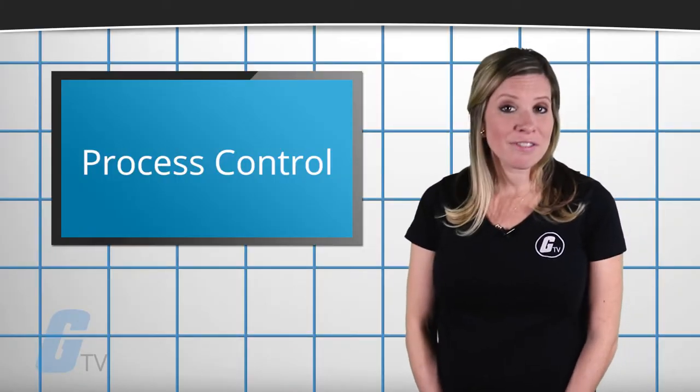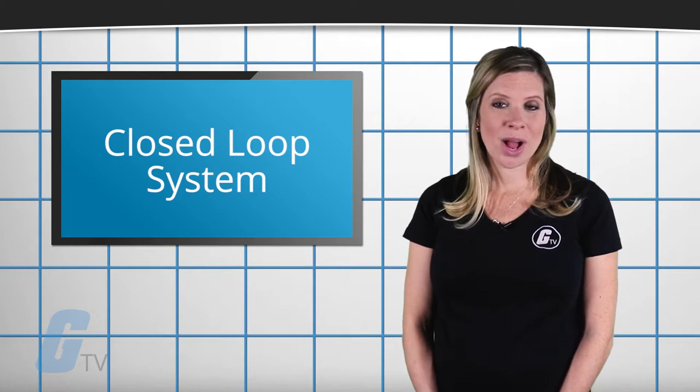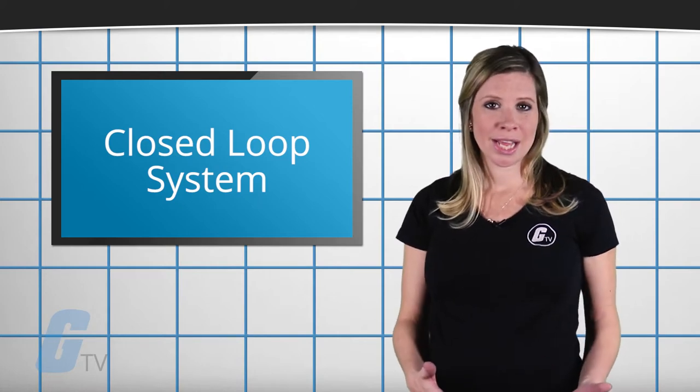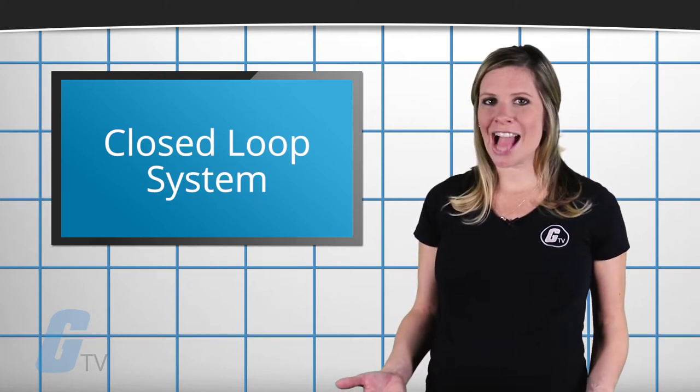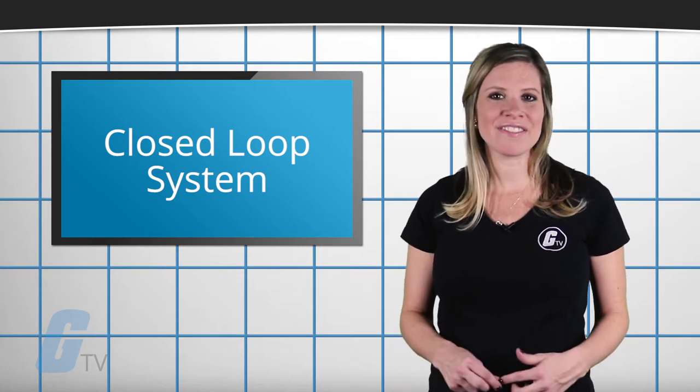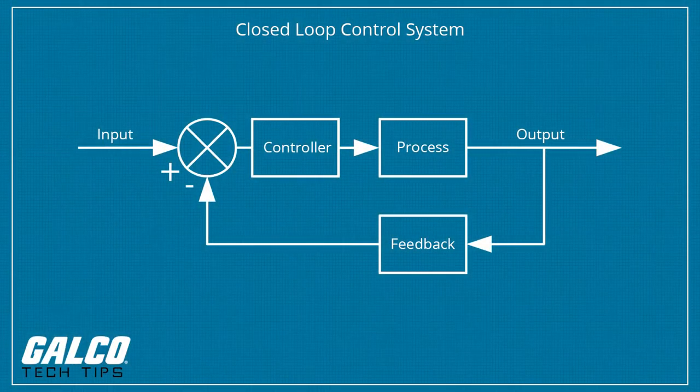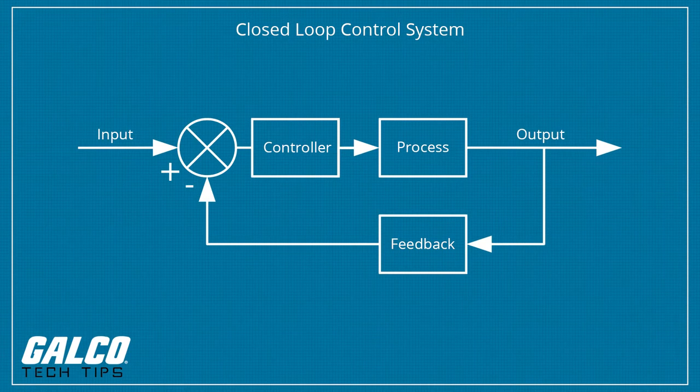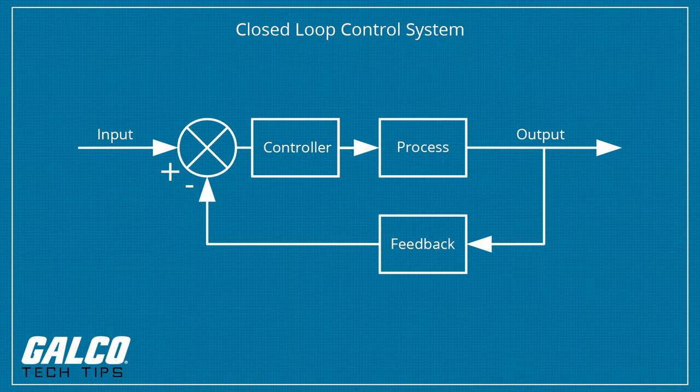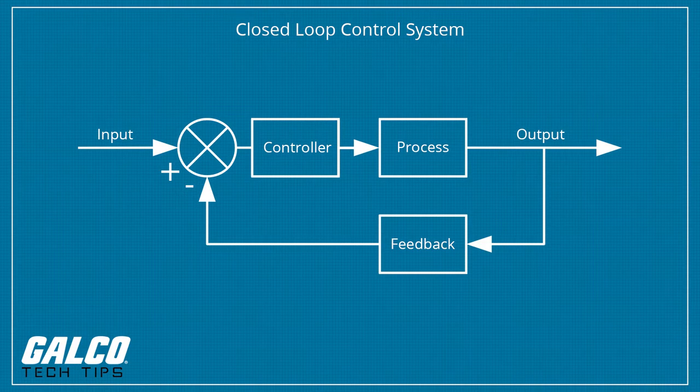Process control is part of a closed loop system in which a process variable is measured, compared to a set point, and action is taken to correct any deviation from the set point. Closed loop control is feedback dependent, receiving feedback from sensors monitoring the process variable and providing feedback to the final control element that corrects any deviation from the set point.